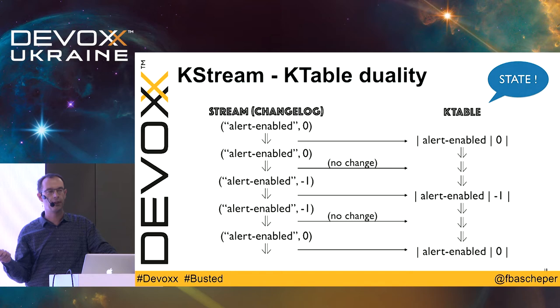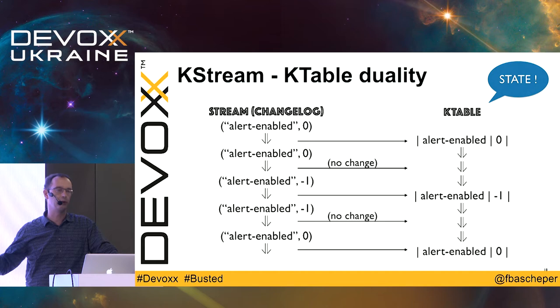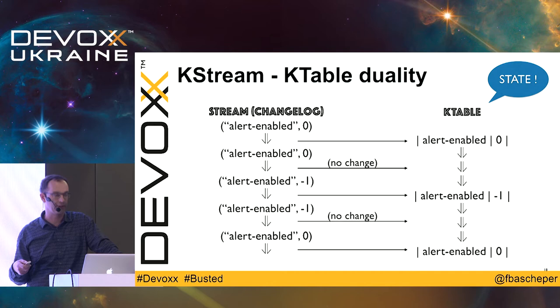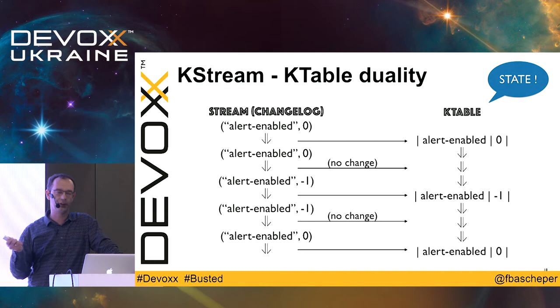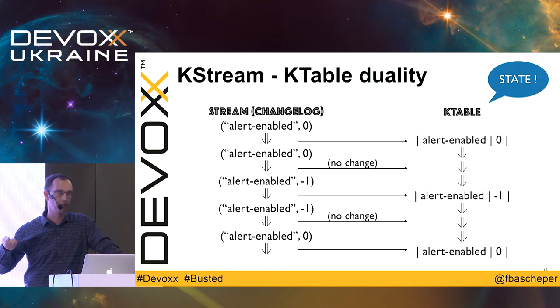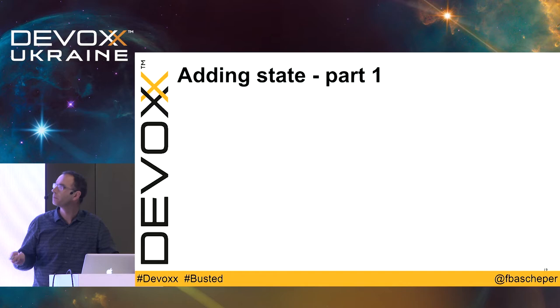You have two types of KTable: the KTable and the GlobalKTable. The difference is that Kafka Streams is a simple Java application you can start multiple times, and Kafka will ensure every Kafka Streams instance gets its fair share of messages. But that might be a problem if not all instances receive the event that the alert-enabled state has changed — that instance would still be processing alerts incorrectly. The GlobalKTable ensures the state is replicated across all Kafka Streams applications you are running.